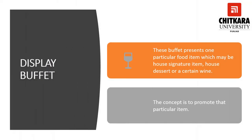A display buffet is primarily a marketing strategy used by restaurants. Signature dishes from the chef are displayed on counters for guests to view; guests order what they like and it is served to them at a higher price. Other displays can include a cheese board showcasing different varieties of cheeses with a knife for tasting, and single malt whiskies, wines, champagnes, and sparkling wines displayed for guests to view and order.